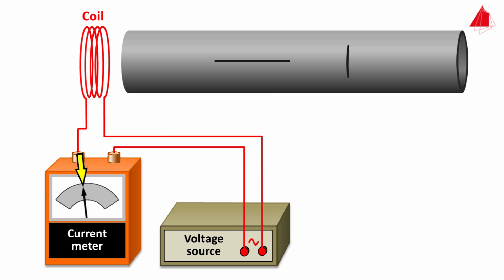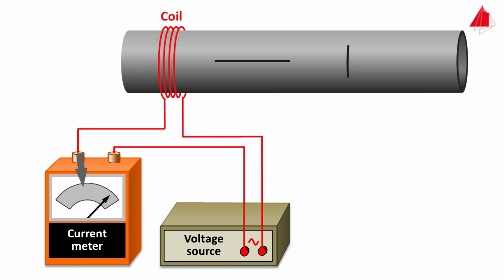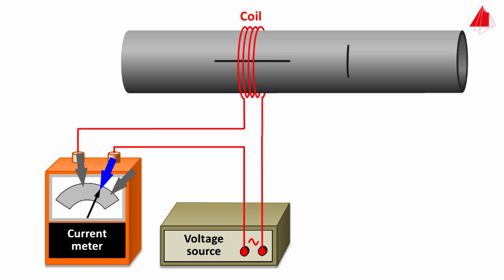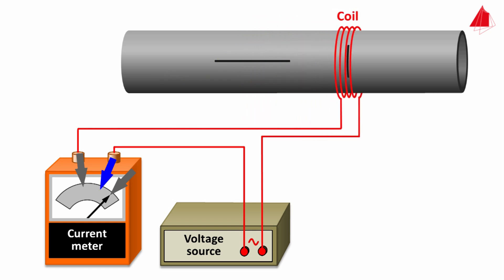Low current consumption as long as the coil is still far away from the tube — due to undisturbed self-induction. Much higher current in the region where the tube is intact, because the eddy current's own magnetic field reduces the inductance of the coil. Smaller current consumption at the longitudinal cut, because the path of the eddy current is longer, so the eddy current is lower and its magnetic field is smaller. Full current consumption at the region with the circumferential saw cut, as if there were no cut at all — the flow of the eddy current is almost undisturbed. Obviously it is not possible to detect crack-like defects that run along the flow lines of the eddy current.